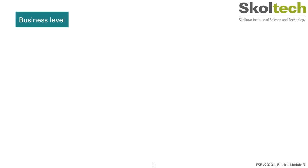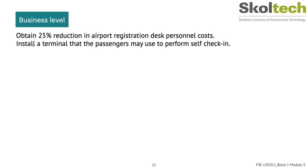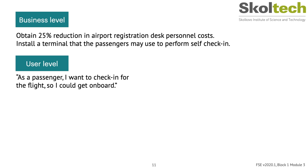Getting back to our airline example: the airline wants to reduce costs for employees at the check-in desk by 25 percent — a valid business goal. They might install a terminal passengers use to perform self-check-in. At the user level, a use case might sound like: 'As a passenger, I want to check in for my flight so I can get on board.' This is a user requirement in user story format.